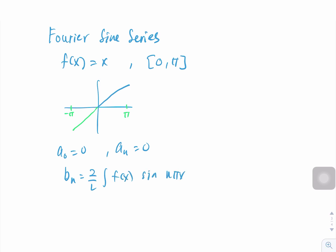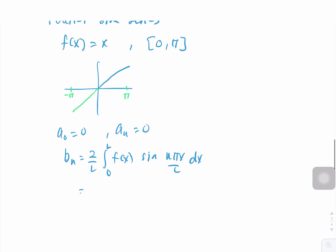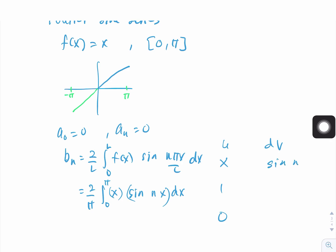bₙ equals 2 over L times the integral from 0 to L of f(x) sin(nπx/L) dx. So bₙ equals 2 over π times the integral from 0 to π of x sin(nx) dx. Since we have an algebraic and trigonometric function, we use integration by parts, selecting u = x and dv = sin(nx) dx.